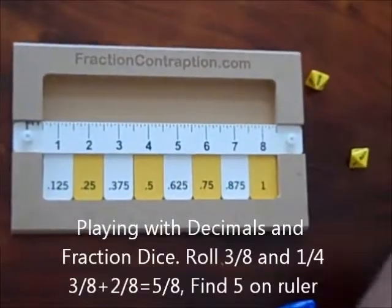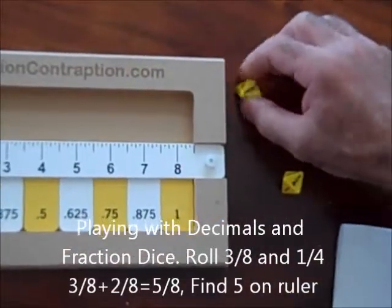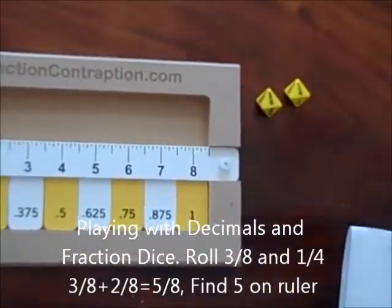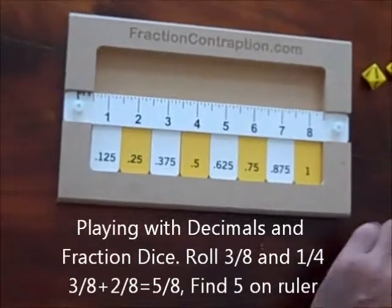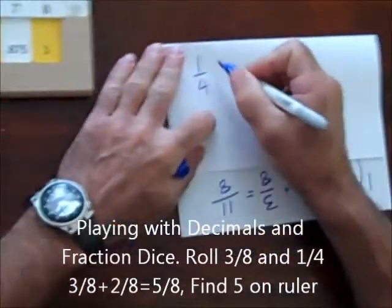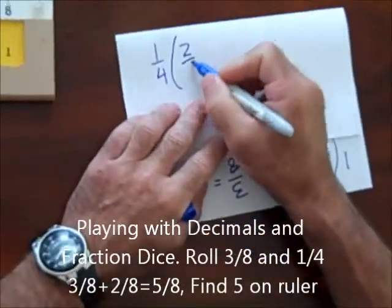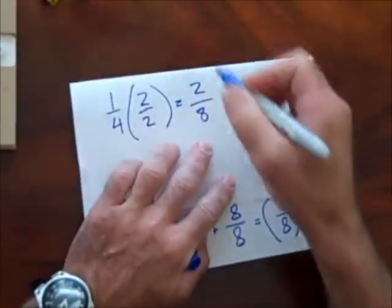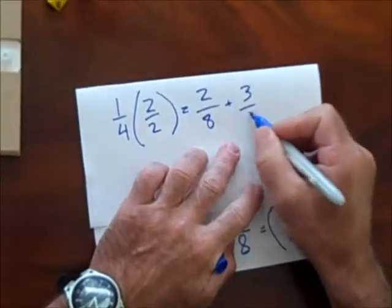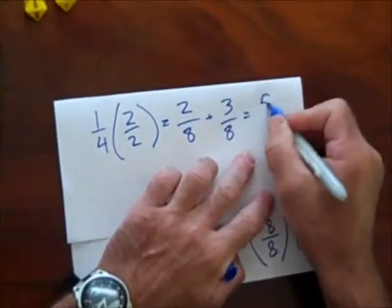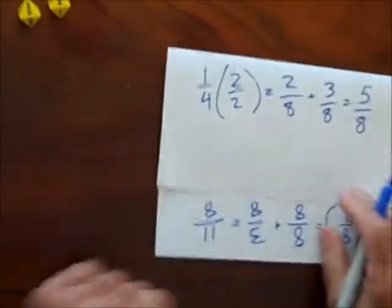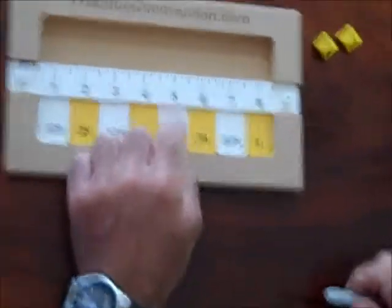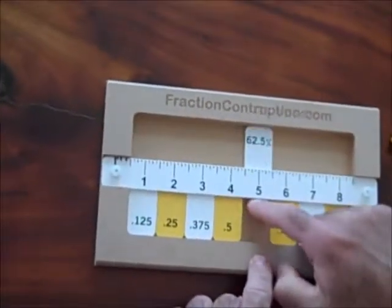Roll my dice and I have 3 eighths and 1 quarter. I have to convert to eighths every time. So I have 1 quarter times a factor of 1, doesn't change the value. My 1 quarter becomes 2 eighths plus my 3 eighths, gives me 5 eighths. I look on the ruler to 5 and that's 5 eighths, .625 is 5 eighths.